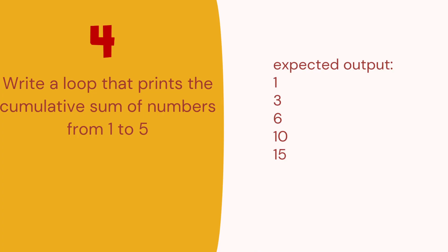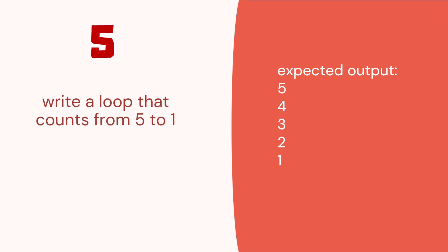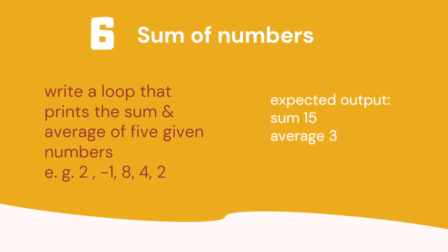Write a loop that prints the cumulative sum of numbers. So we're going to go 1, 2, 3, 4, 5. But the output is going to be 1, then 1 plus 2, then 1 plus 2 plus 3 plus 4 plus 5. So 1, 3, 6, 10, 15 would be the output. Write a loop that counts from 5 to 1. And number 6: write a loop that prints the sum and average of 5 given numbers. So the average of these numbers is 3, and the total, the sum when you add them up, is 15.